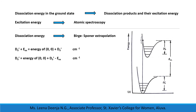The molecules in excited states usually return to the ground state within a fraction of a microsecond, so the dissociation energy in the ground state can be found easily if the dissociation products and their excitation energies are known. The excitation energy can be calculated from atomic spectroscopy and the dissociation energy from Birge-Sponer extrapolation. We can then measure the energy of the 0–0 transition using D₀-dash plus E_excitation equals energy of 0–0 excitation plus D₀ double-dash, or equivalently, D₀ double-dash equals energy of 0–0 excitation plus D₀-dash minus E_excitation.